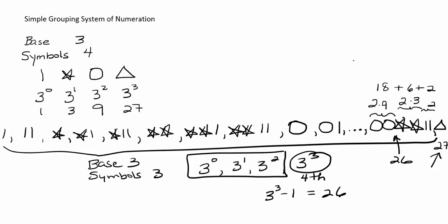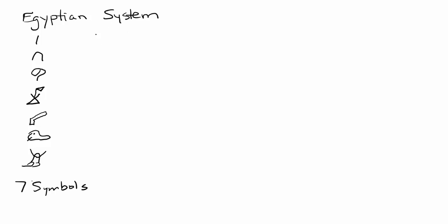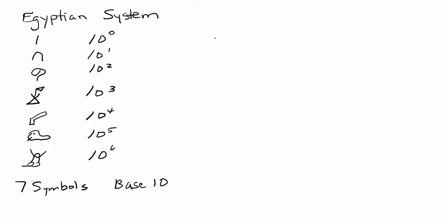Let's apply that reasoning to the Egyptian system of numeration. In that system there are 7 symbols: the stroke, heel bone, scroll, lotus flower, pointing finger, burbot fish, and astonished person. It is a base-10 system, meaning each symbol represents a power of 10 — from 10 to the 0 up through 10 to the 6th.